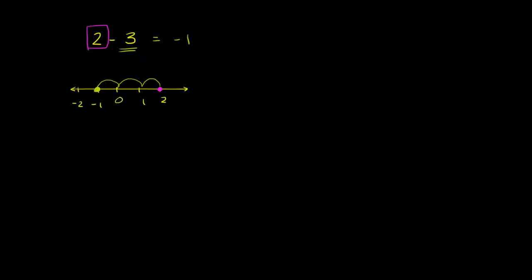Now let's mix it up a little bit more. Let's imagine what would happen if we had negative 2 minus 3. So this was positive 2 minus 3. Now let's think about negative 2 minus 3. So once again, let's draw our number line.